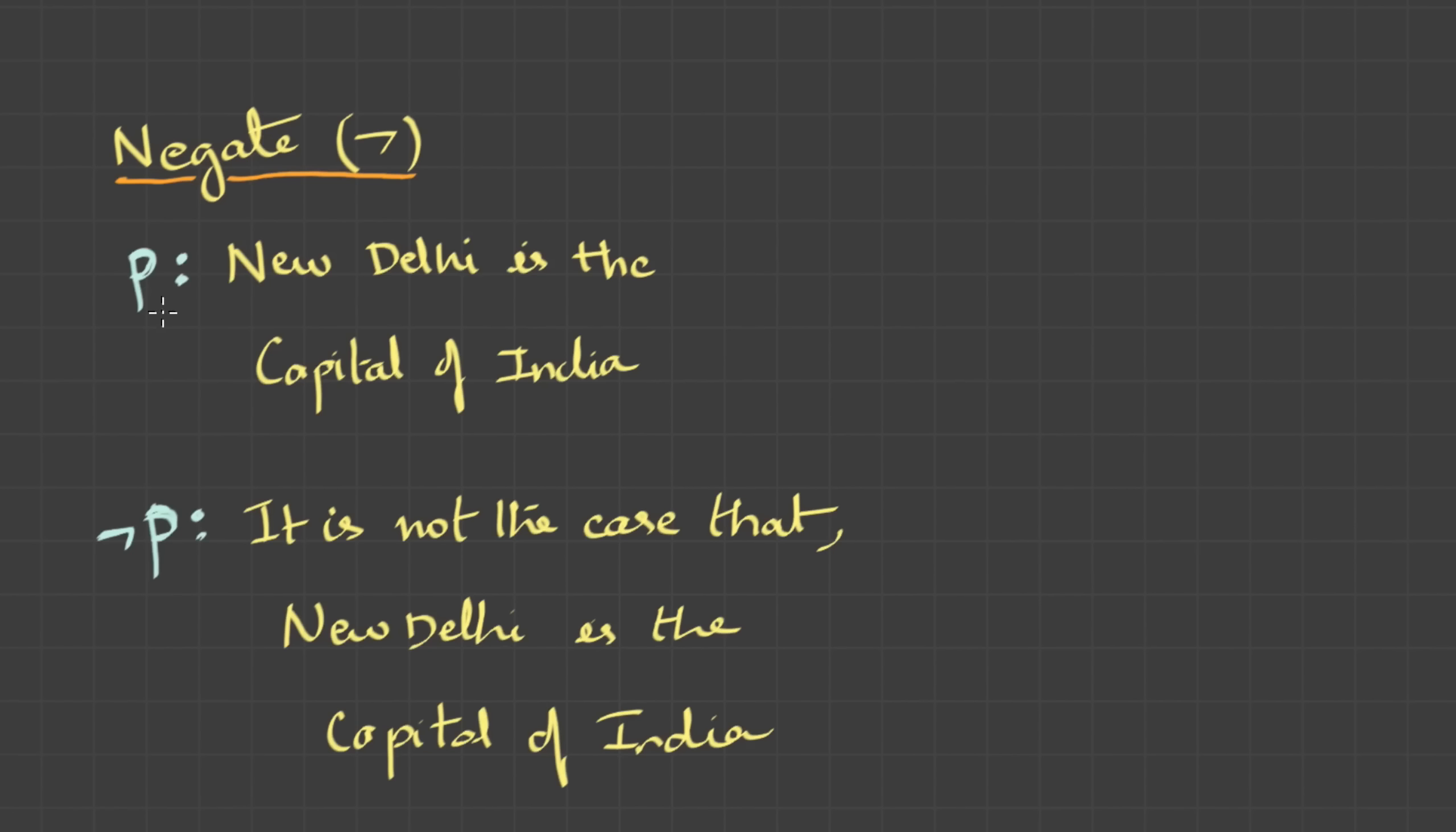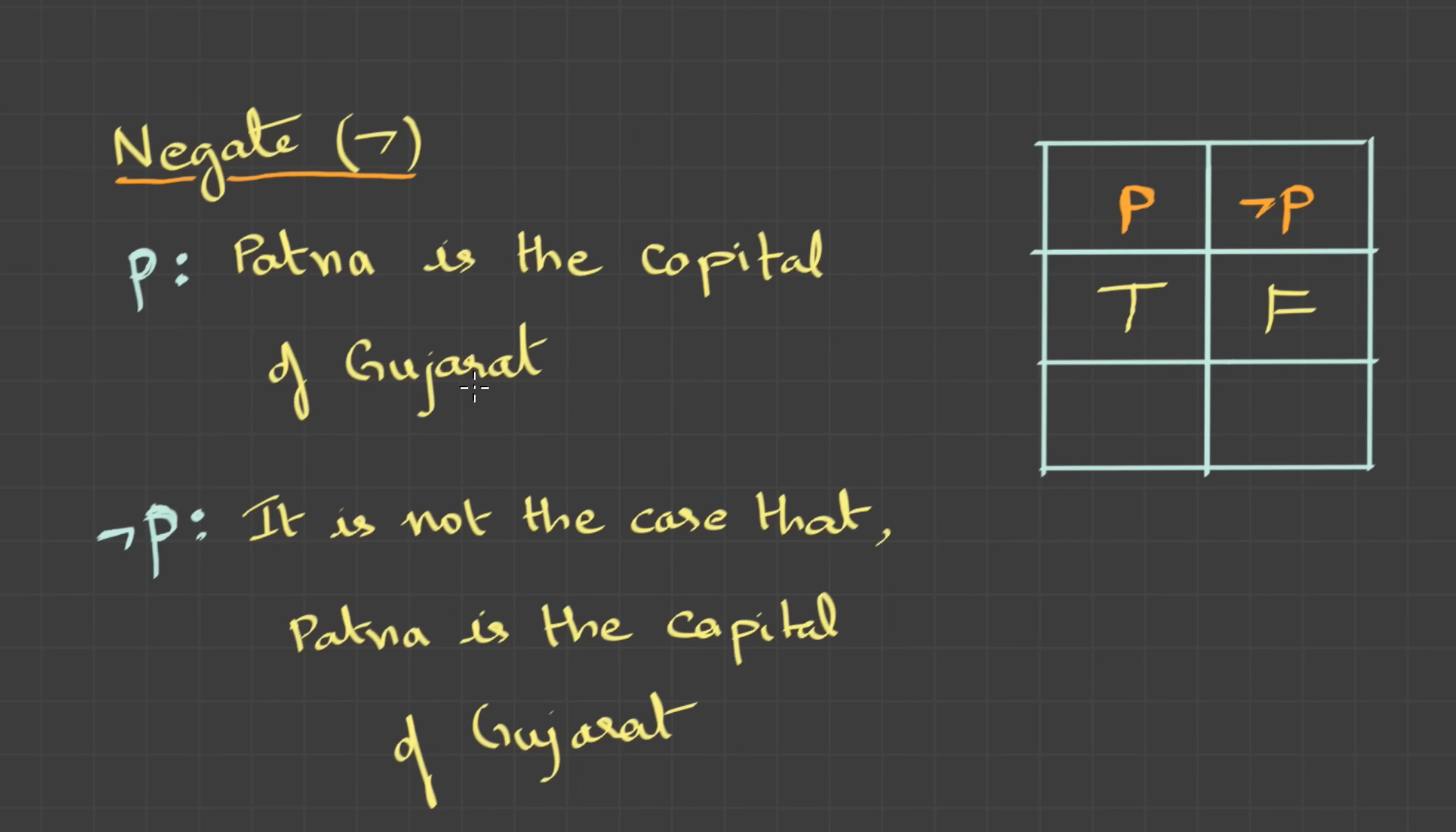To formulate the negate operation, let's take an example. Here we have a statement p. New Delhi is the capital of India. And if I negate it, it's not the case that New Delhi is the capital of India. We humans are lazy, and always need some easy tricks and shortcuts to memorize things. So for convenience, let's draw a table. And these tables are called truth tables. So here, the statement is true. So p is true. Then it's pretty obvious this statement is false. Let's take one more example. So here is the statement. Patna is the capital of Gujarat. This is false. Patna is capital of Bihar. So p is your statement is false. And when you negate a negative statement, it becomes true. It's not the case that Patna is the capital of Gujarat. That's true. So if you have a statement that's true, when you negate it, it becomes false. And if a statement is false, if you negate it, it becomes true.